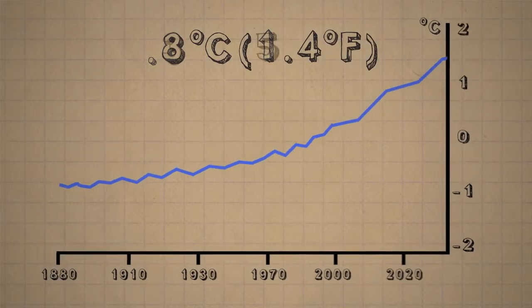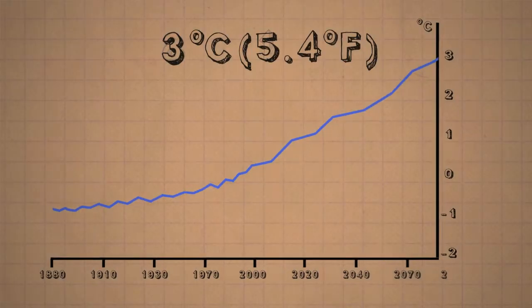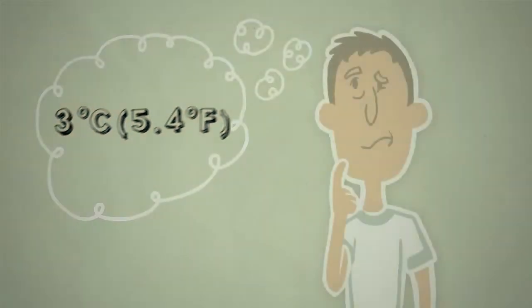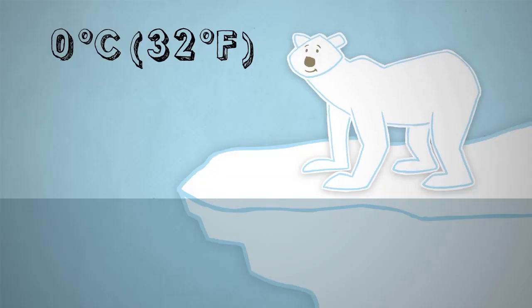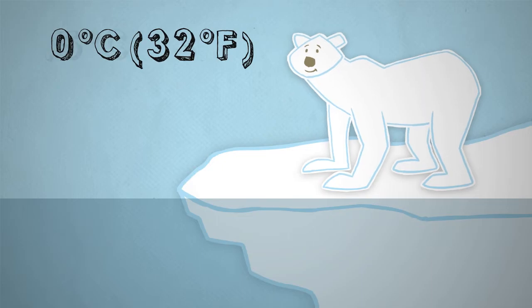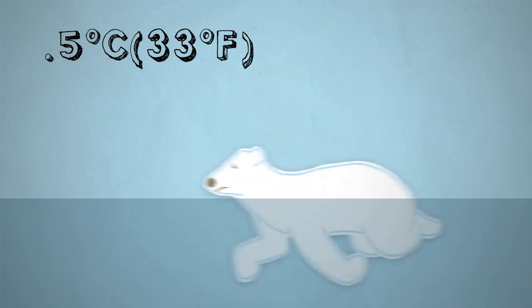And scientists project that the Earth will warm up another 3 degrees Celsius or more by the year 2100. That might not sound like much, but consider this. Ice freezes at 0 Celsius, or 32 Fahrenheit. It doesn't freeze at 0.5 Celsius, or 33 Fahrenheit.